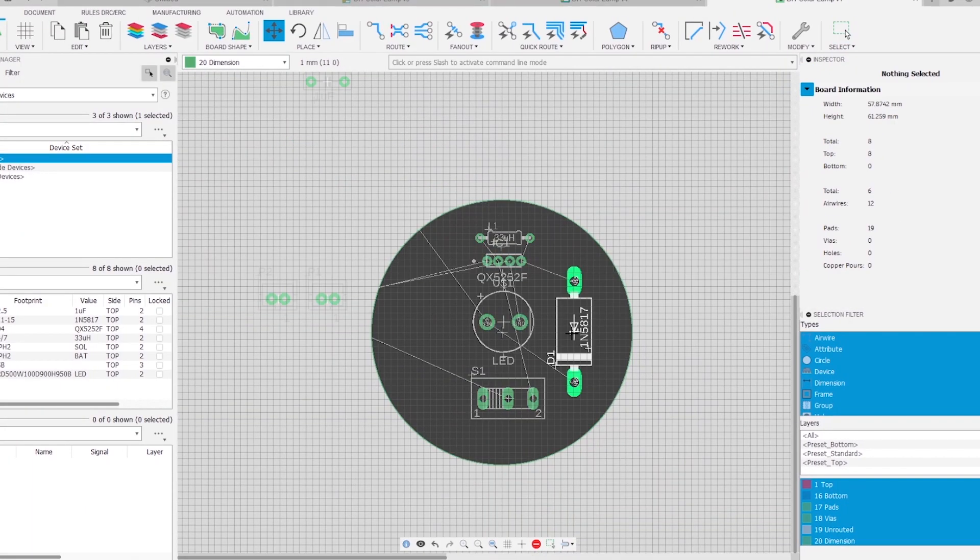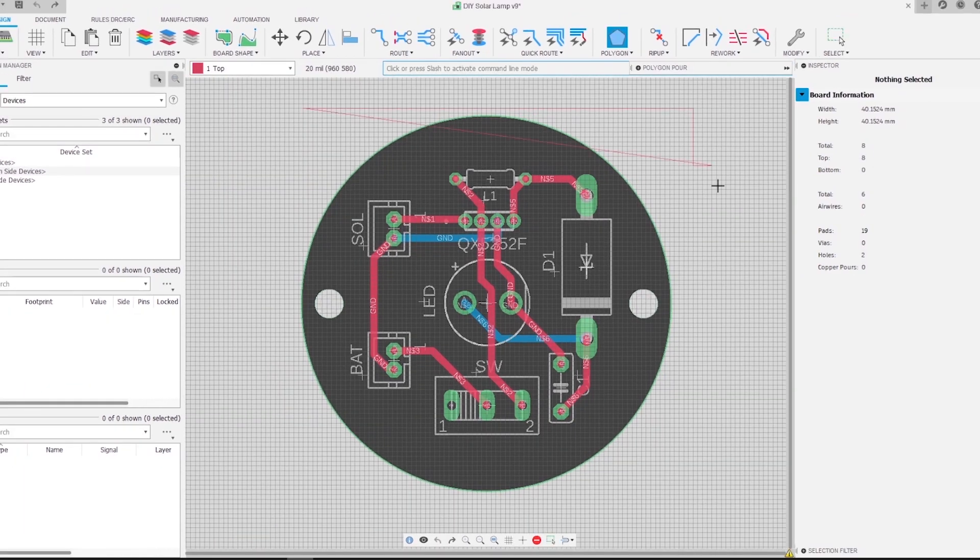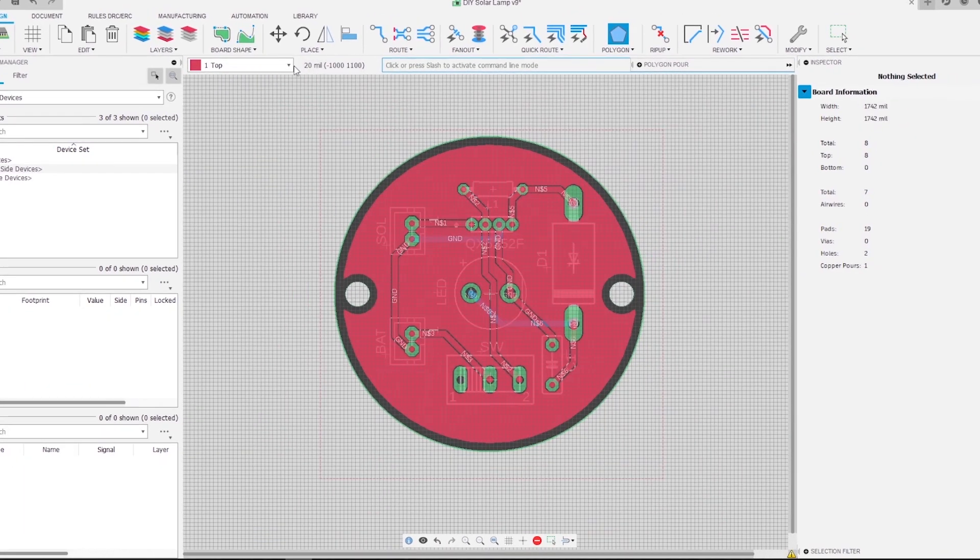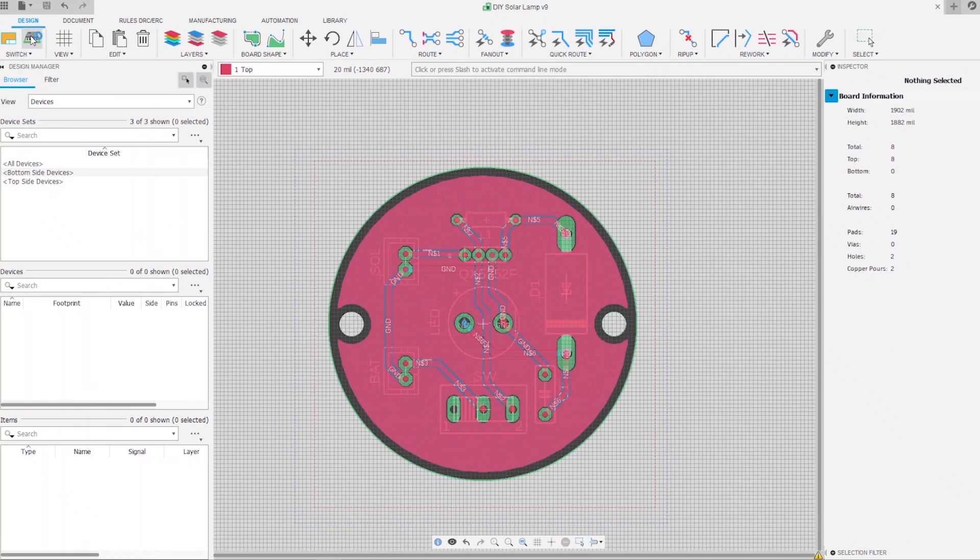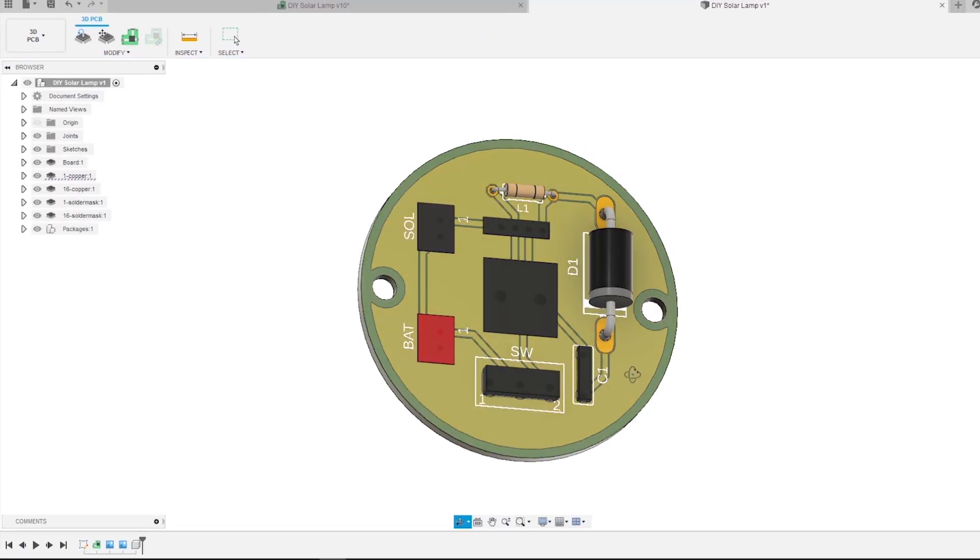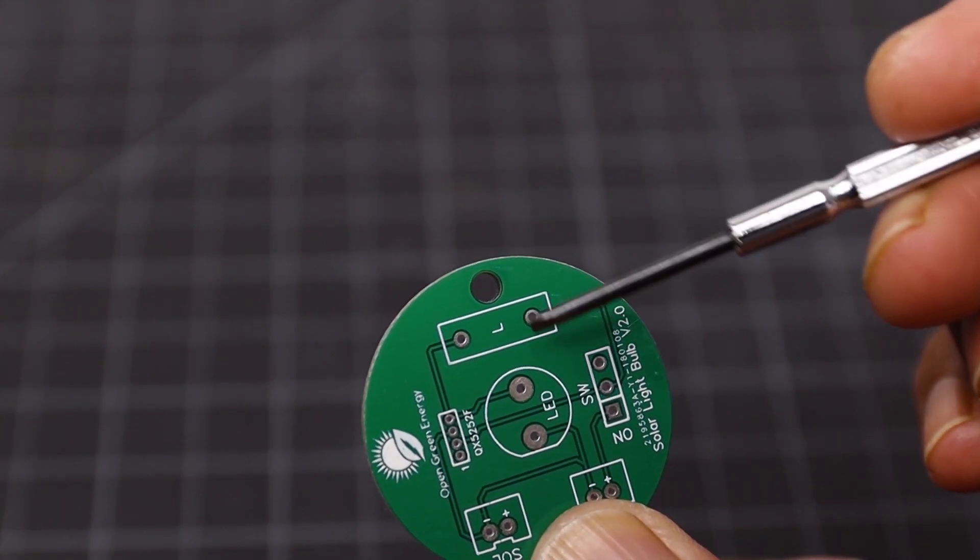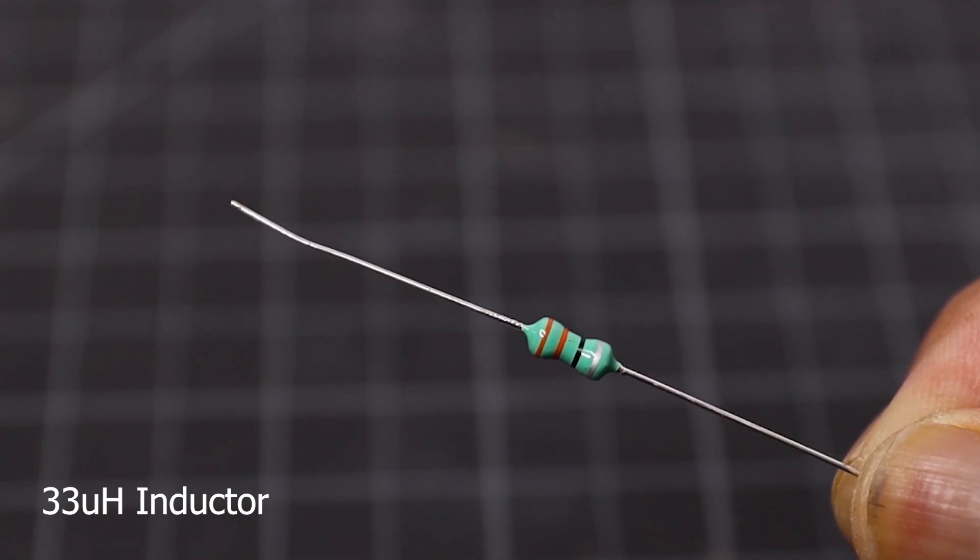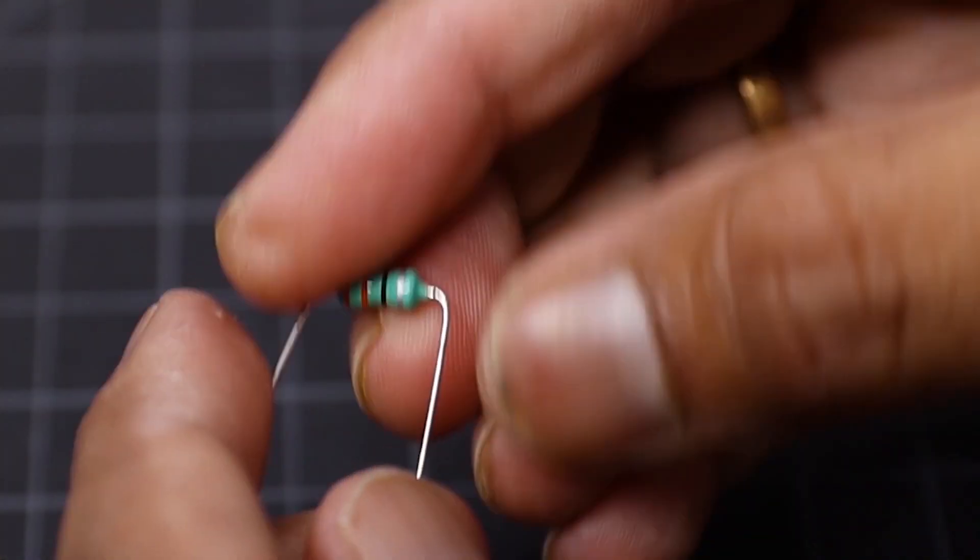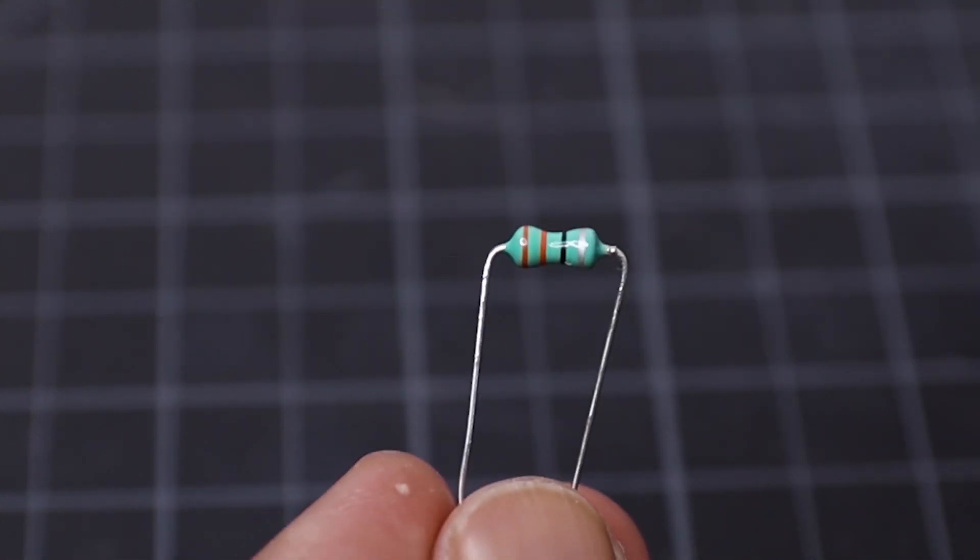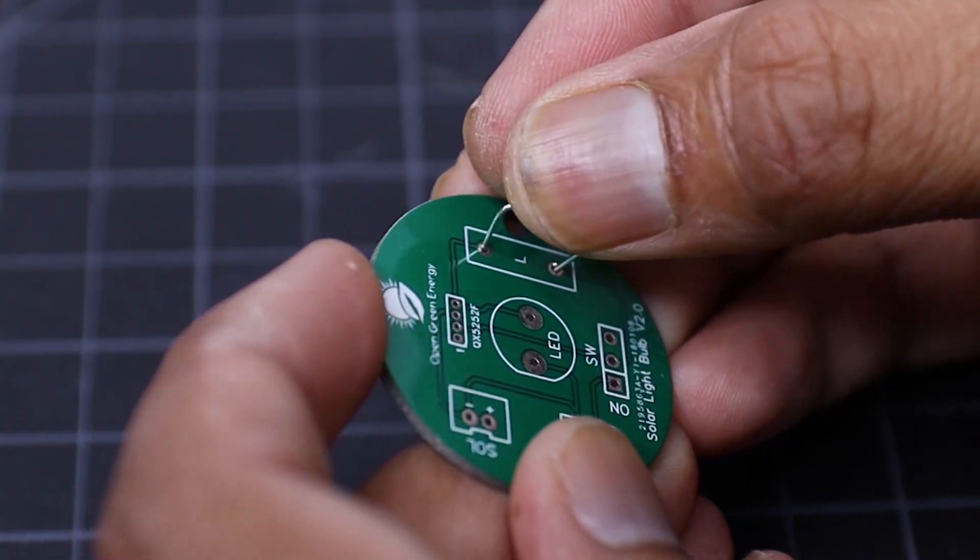Here I am going to show you the assembling of my earlier version. The process of assembling the new version and the earlier version is very similar. In the new version you have to only add two additional components: the diode and the capacitor. Now let's move to assemble the PCB. It is always good practice to solder the component according to their height, so I solder the lesser height component first. In this solar lamp PCB, the inductor is the lesser height component, so I solder the inductor first. Then I trim the extra leg by using a nipper.